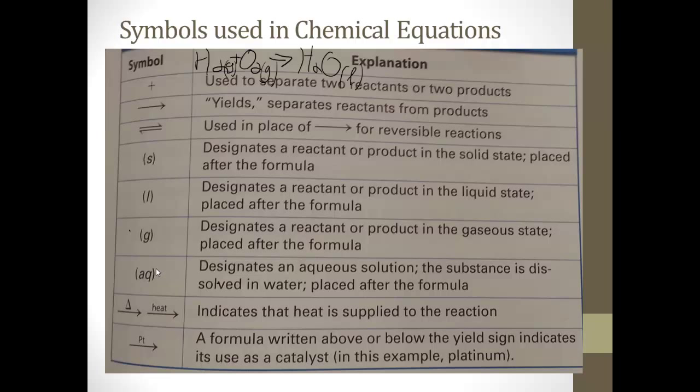AQ is an aqueous solution, something dissolved in water. So you might have something written like Na+ (aq), Cl- (aq), to show it's an aqueous solution. Above the arrow, you might have this delta, or heat, to show that heat is supplied. Sometimes you might see it written as, here's a reactant plus heat yields some amount of products. And just like we saw a moment ago, a chemical formula written above the arrow just shows the presence of a catalyst.